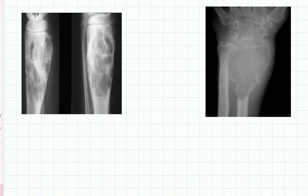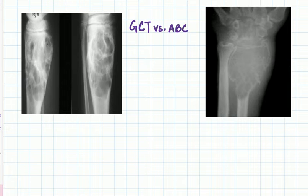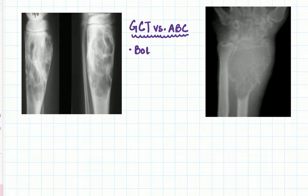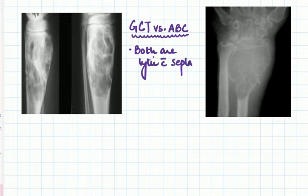Today's video is about a recent MCQ from a PGMA exam. It was an image-based question, and although the options included GCT and osteoclastoma, some students had confusion between GCT or ABC — because normal teaching is that both are lytic lesions with multiple septae.